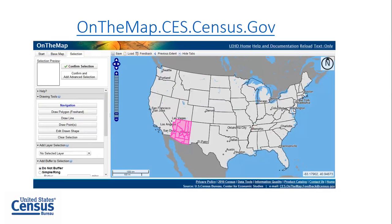On the FEMA disaster declaration page, I downloaded the KMZ files ahead of time and was able to import them into On the Map — a web-based mapping and reporting application that shows where workers work and where they live. It provides companion reports on age, earnings, industry, distribution, race, ethnicity, educational attainment, and sex. We have data from 2002 all the way to 2017 for most of the 50 states including DC, though there is no data for Alaska and South Dakota in 2017, and data for 2016–2017 does not include federal data but will be backfilled by end of fall.